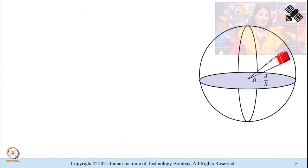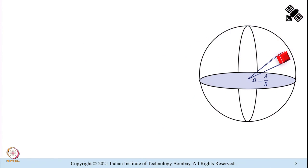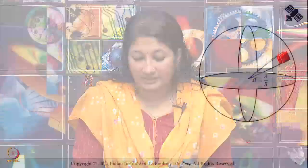Scattering cross section refers to how effectively a scatterer scatters the radiation. It is usually denoted by the Greek letter sigma. It helps you understand the effectiveness of any scatterer. The incident energy is not going to be scattered equally in all directions — it is not isotropic. There will be some directions in which scattering is more predominant and certain other directions where scattering is less.